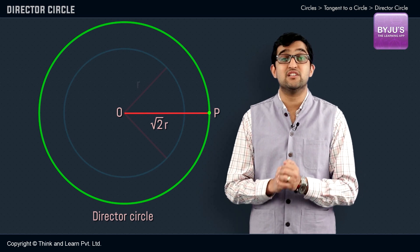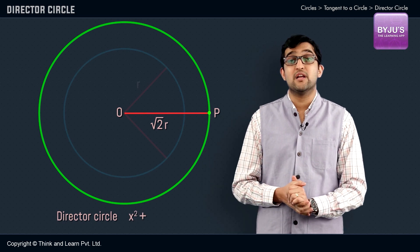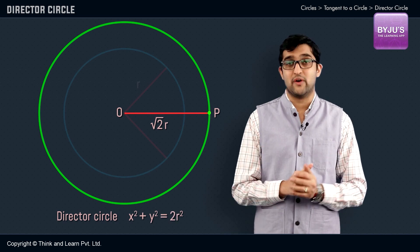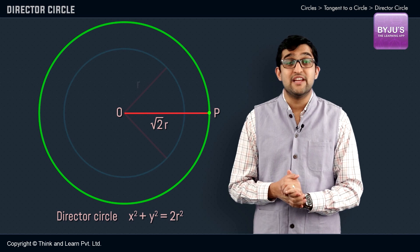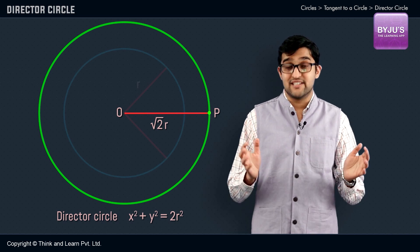The equation of the director circle will be x² + y² = 2R². Simply change the radius in the given circle equation to √2R and rewrite the circle equation.